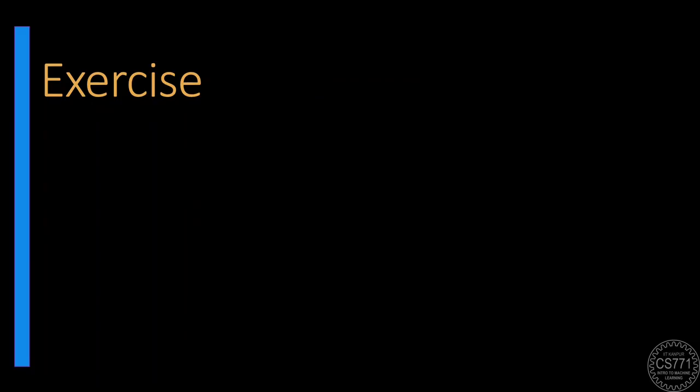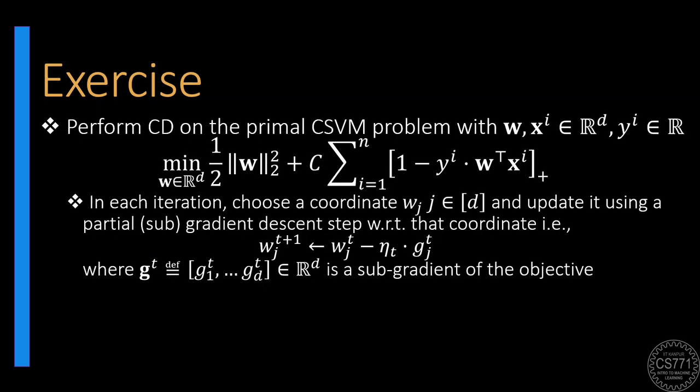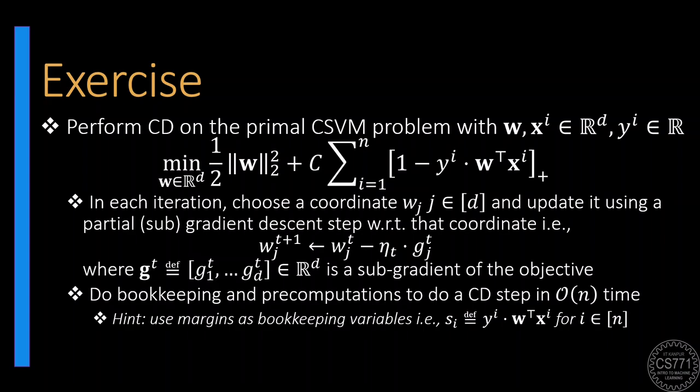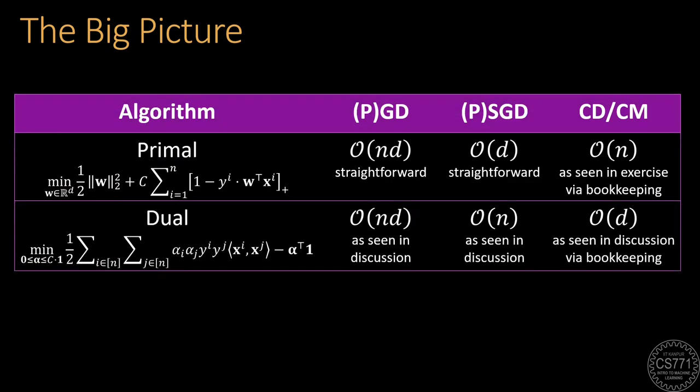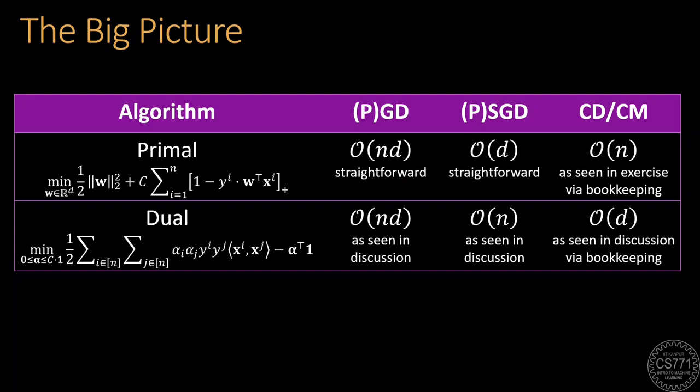To practice your skills at designing algorithms using bookkeeping and pre-computation tricks, try to design a coordinate descent algorithm that solves the CSVM in the primal. In each iteration, you would choose some coordinate of the model vector w and take a partial sub-gradient step along that coordinate. Try to use bookkeeping tricks and pre-computation to make sure that you are able to do this in no more than order n time. Here is a hint of what you might find helpful as a bookkeeping variable. Having explored so many solvers for the CSVM problem both in the primal and dual, let us take a step back to see the big picture.